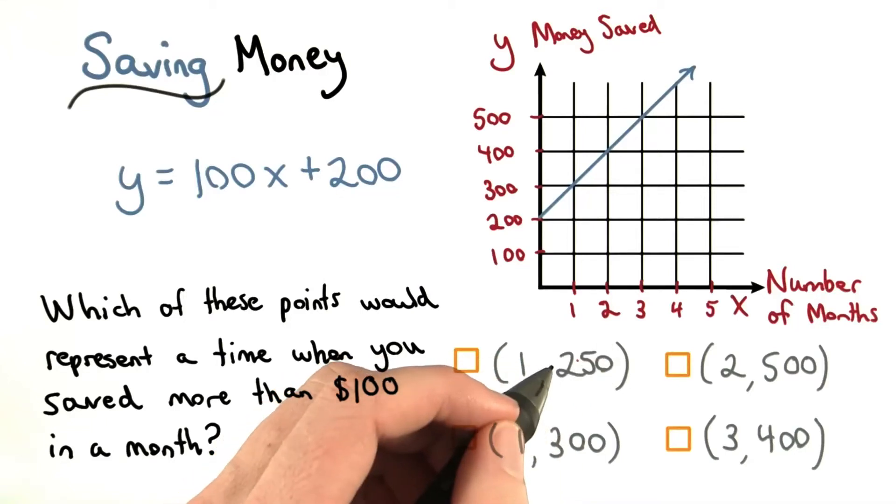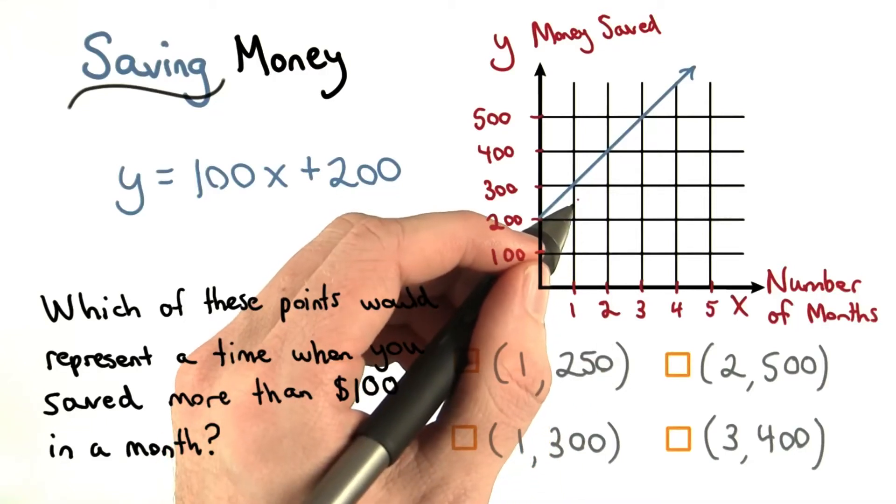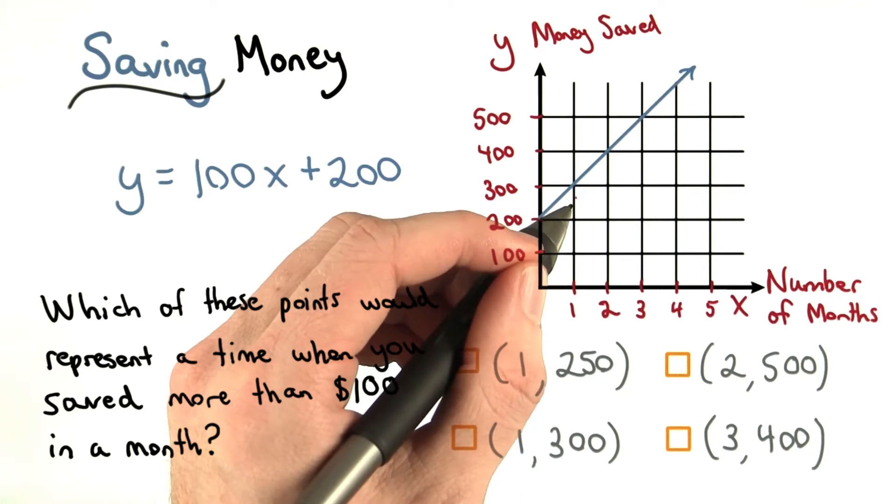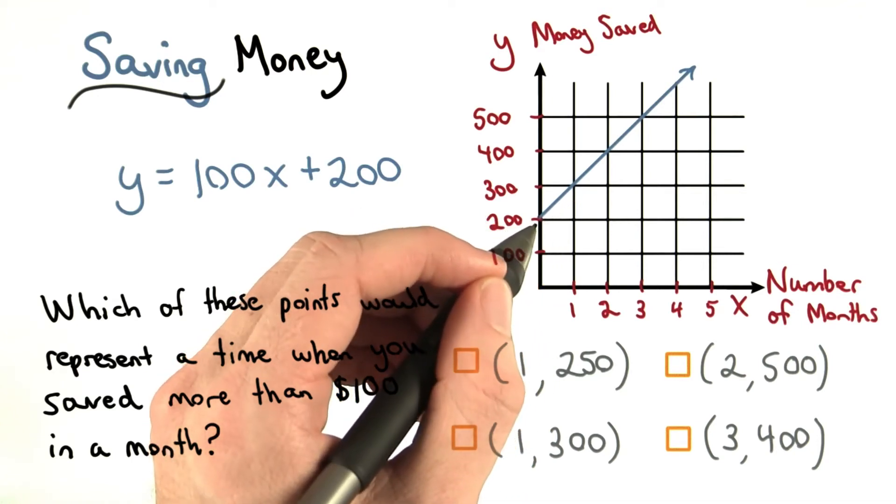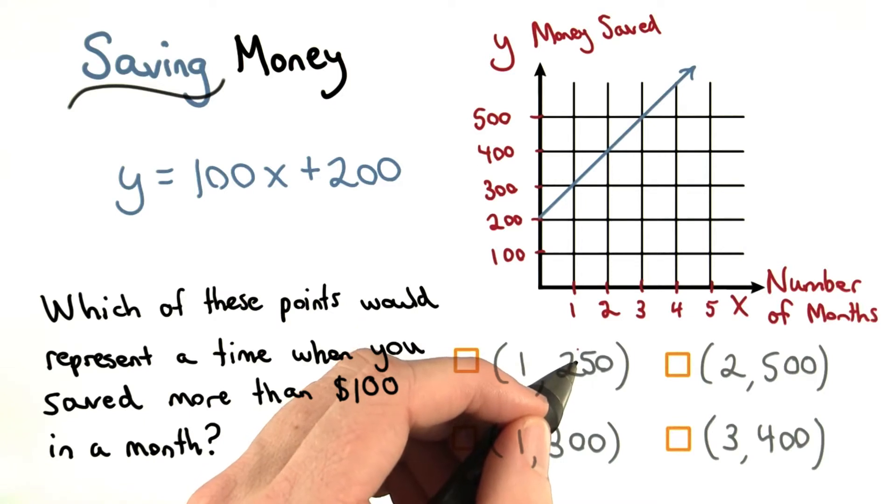After one month, I would have $250. Well, this is below our line, so that means we saved less than $100 in a month. We started with $200, and we only gained 50.